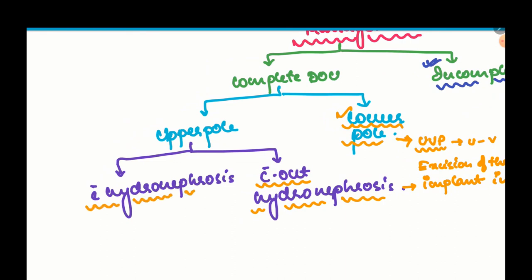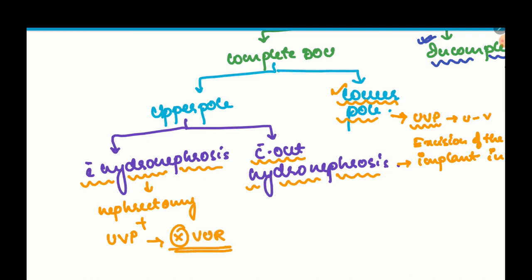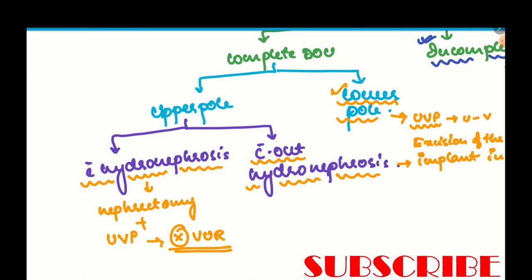But if there is upper pole ureterocele with hydronephrosis, the kidney cannot be saved — do a nephrectomy to excise the entire hydronephrotic portion. Along with that, also do a UVP, ureterovesicoplasty, to strengthen the ureterovesical junction and prevent VUR from the lower pole ureter in the same surgery.